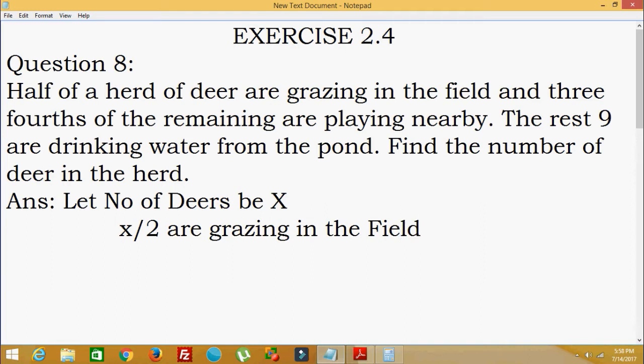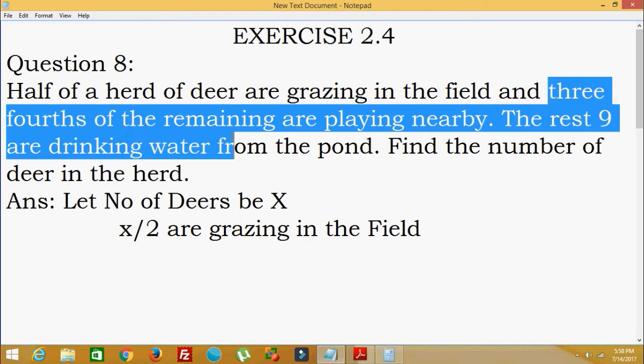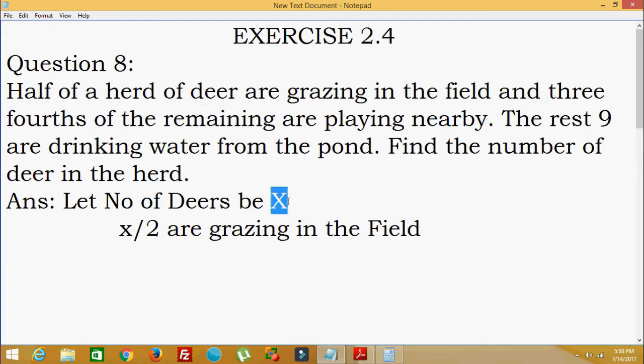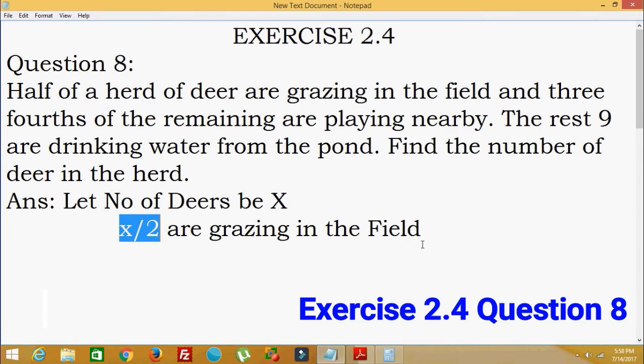Now, the next thing is three-fourths of the remaining. Please understand here carefully—three-fourths of the remaining. Remaining means x/2 are already grazing, so the remaining are another x/2.